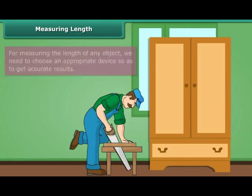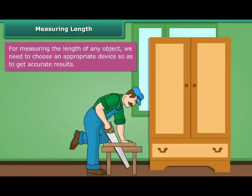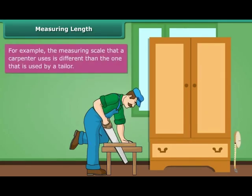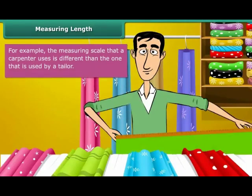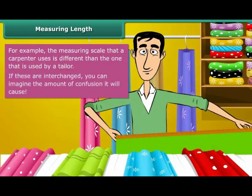Measuring Length. For measuring the length of any object, we need to choose an appropriate device so as to get accurate results. For example, the measuring scale that a carpenter uses is different than the one that is used by a tailor. If these are interchanged, you can imagine the amount of confusion it will cause.